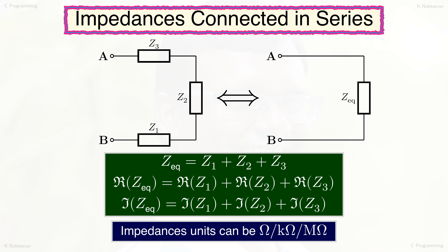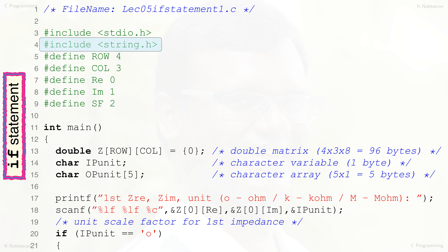This unit scaling factor will be used to convert all the input impedances in terms of ohms while calculating the equivalent impedance. Finally, check the major unit of the three input impedances and rescale the calculated real and imaginary parts of the equivalent impedance and display it in that major unit. In line 4, the string.h header library file is included in the preprocessor, as later in the C program we need to copy a unit string to an array of characters.